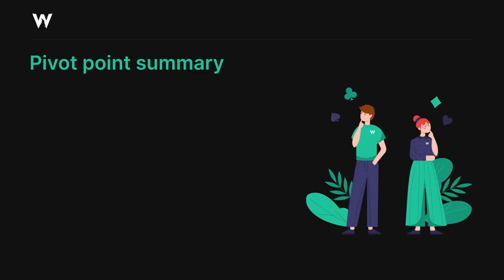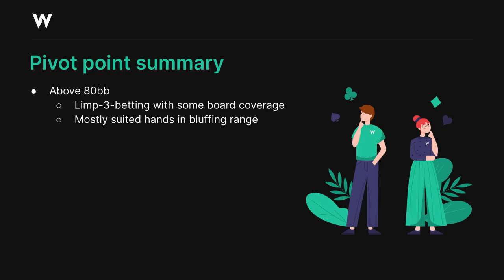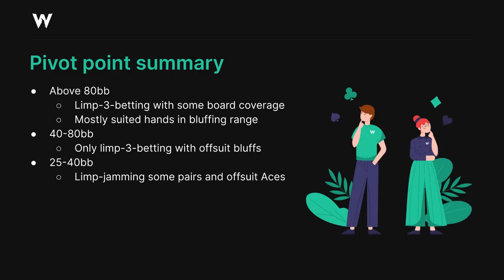To summarize our overall approach at this node: when we're deep stacked above 80 big blinds, we're limp 3-betting with a more diverse range which possesses good board coverage and includes some suited connectors. As we get shallower, those suited hands disappear from our bluffing range and are replaced by a lot of offsuit ace-x hands and other bluffs. Below 40 big blinds, we start limp jamming some hands — mostly pairs and offsuit aces — while we begin to trap a bit more readily with jacks plus as we start to get shallower and shallower.